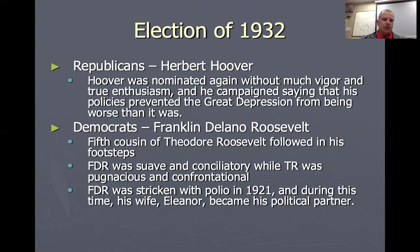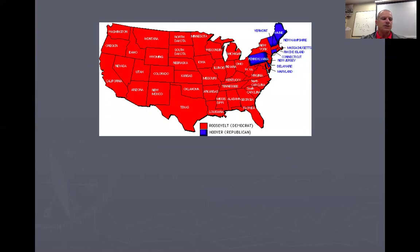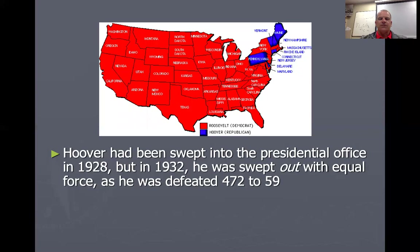In 1921, FDR was stricken with polio, which took away his ability to walk. He was paralyzed from the waist down — early on paralyzed higher, but then regained some upper body movement. From the waist down he was paralyzed and never able to feel his legs again after 1921. He was bound to a wheelchair, but through hard work and determination he was able to get himself to walk with crutches.